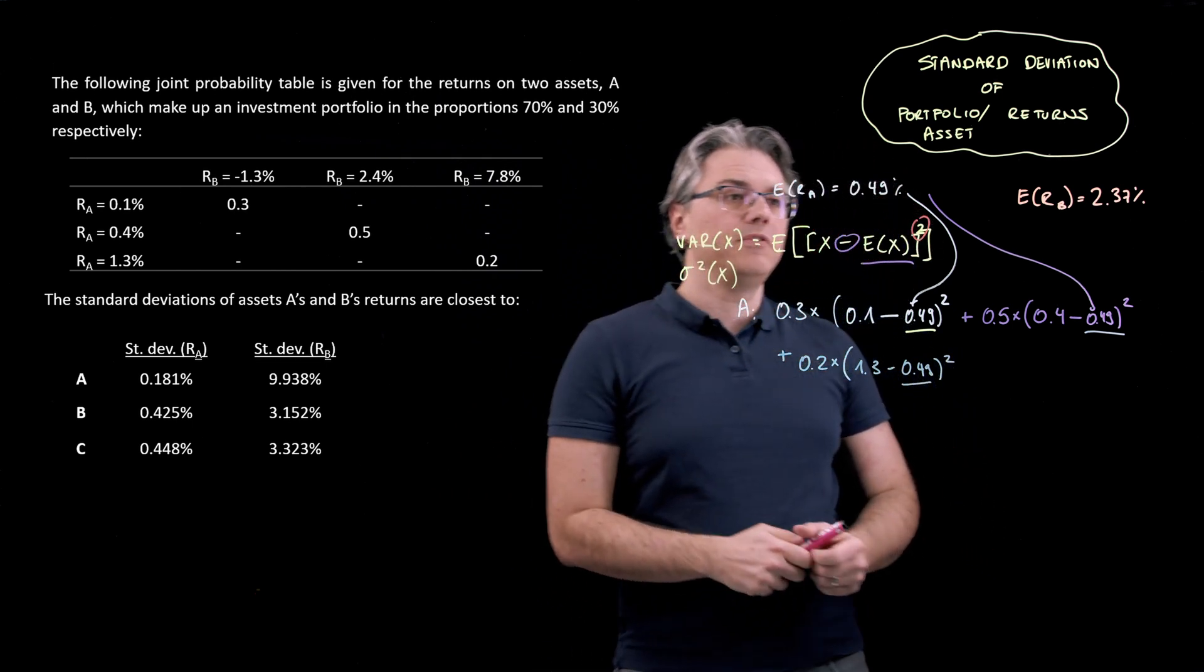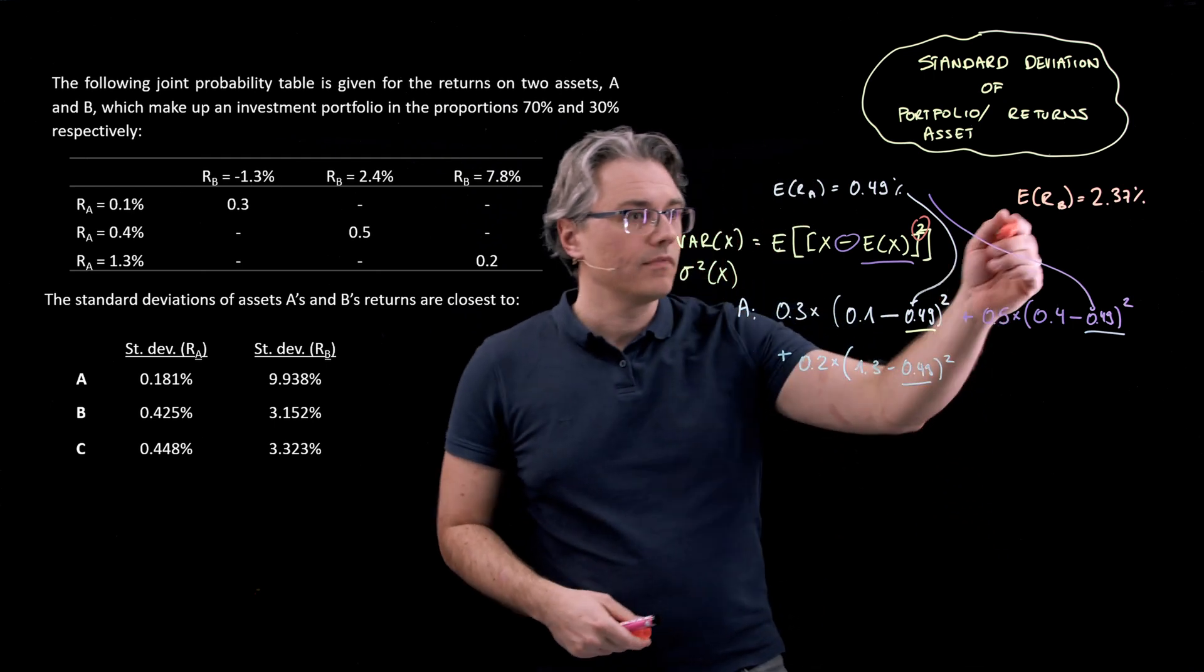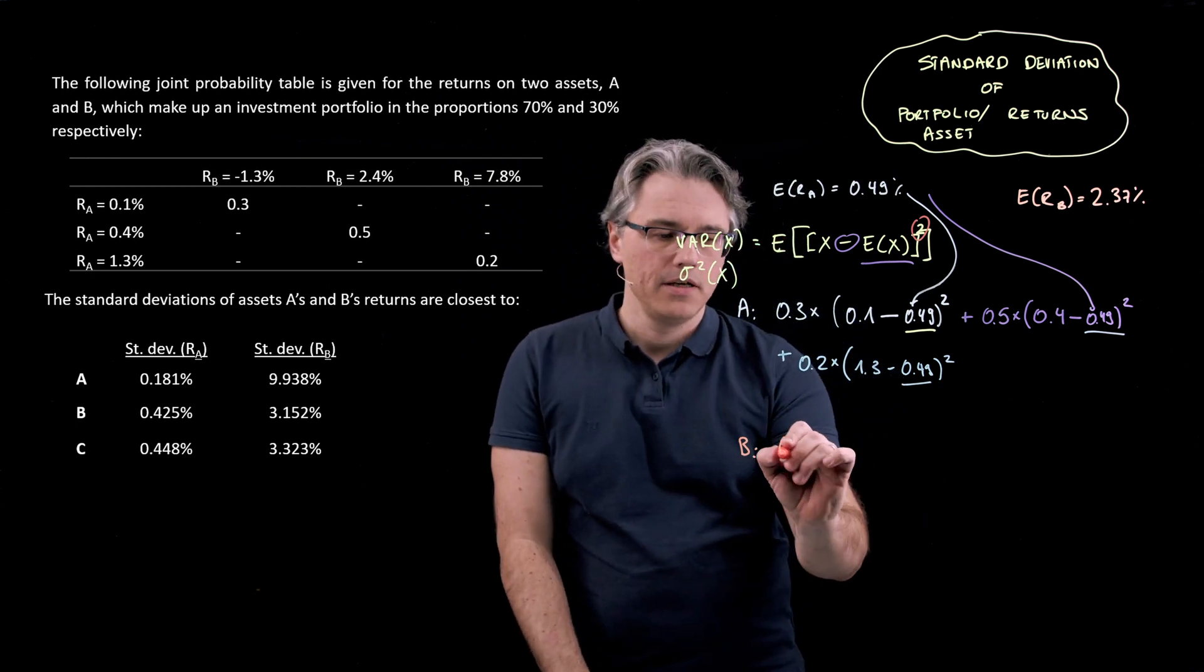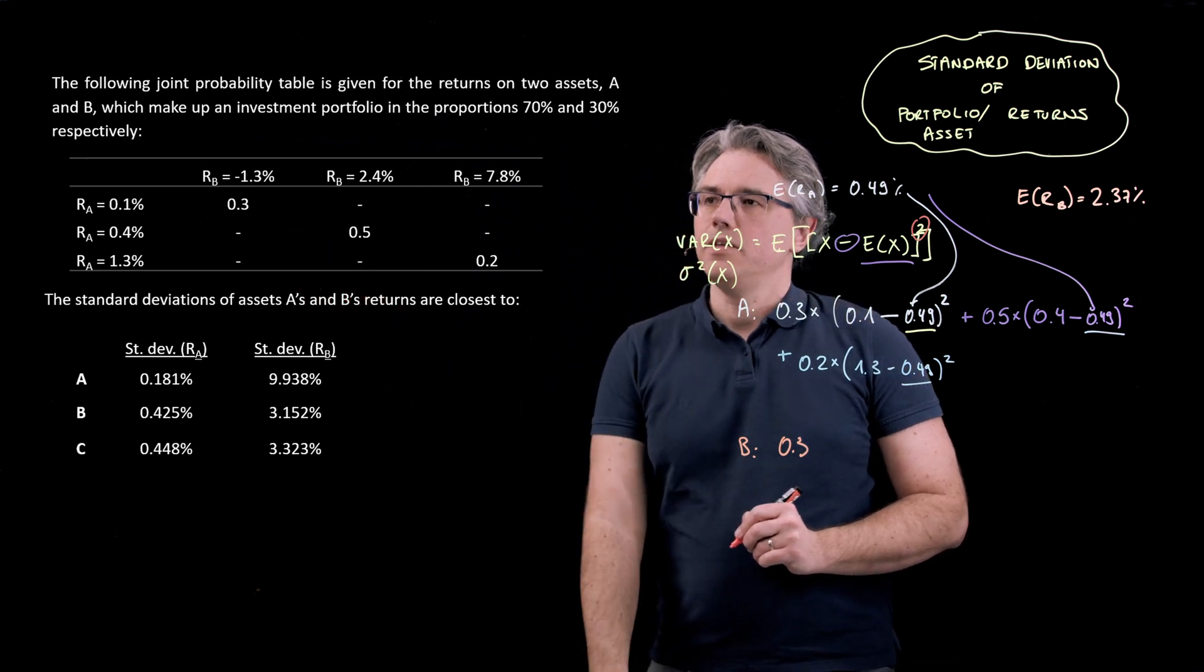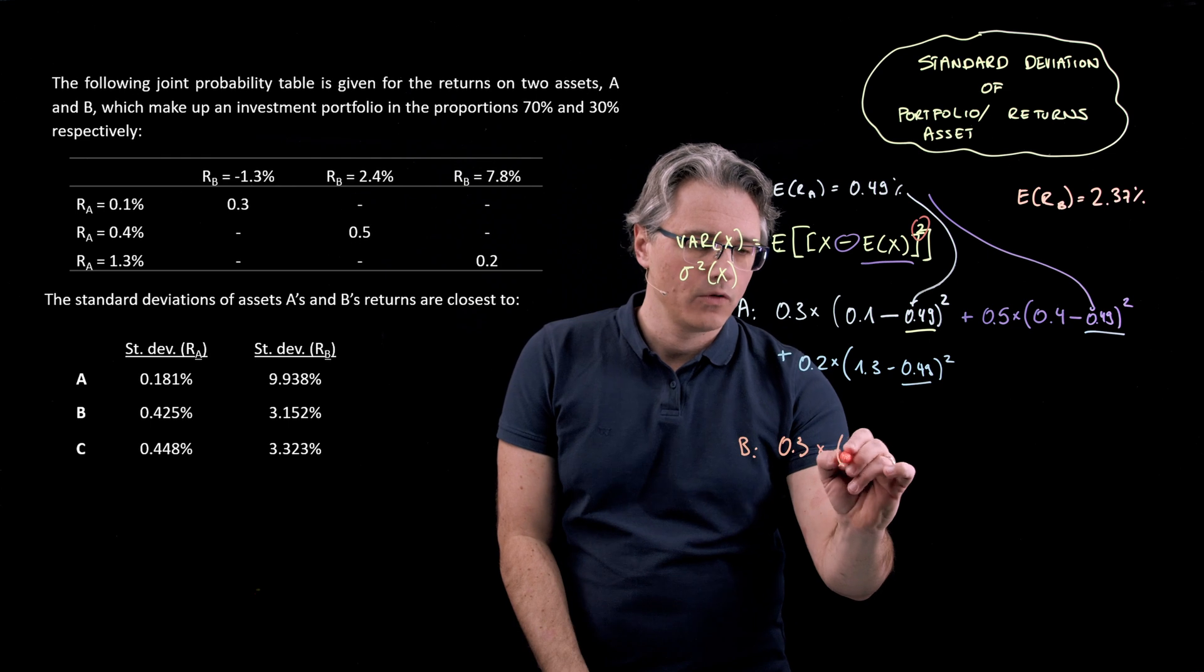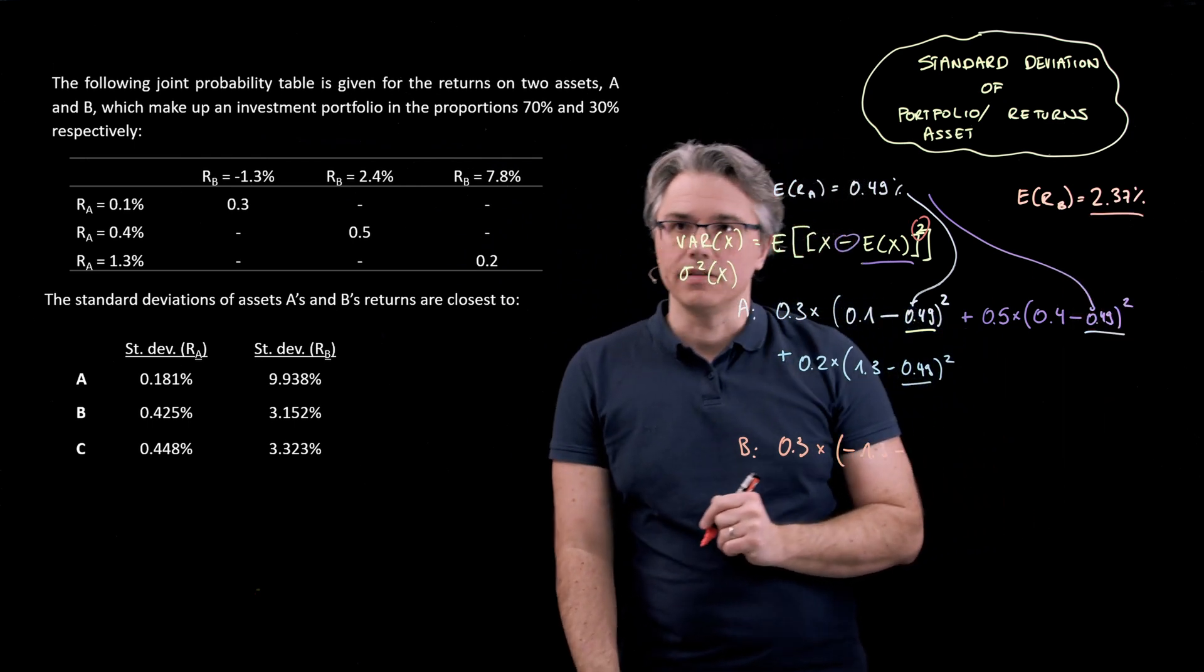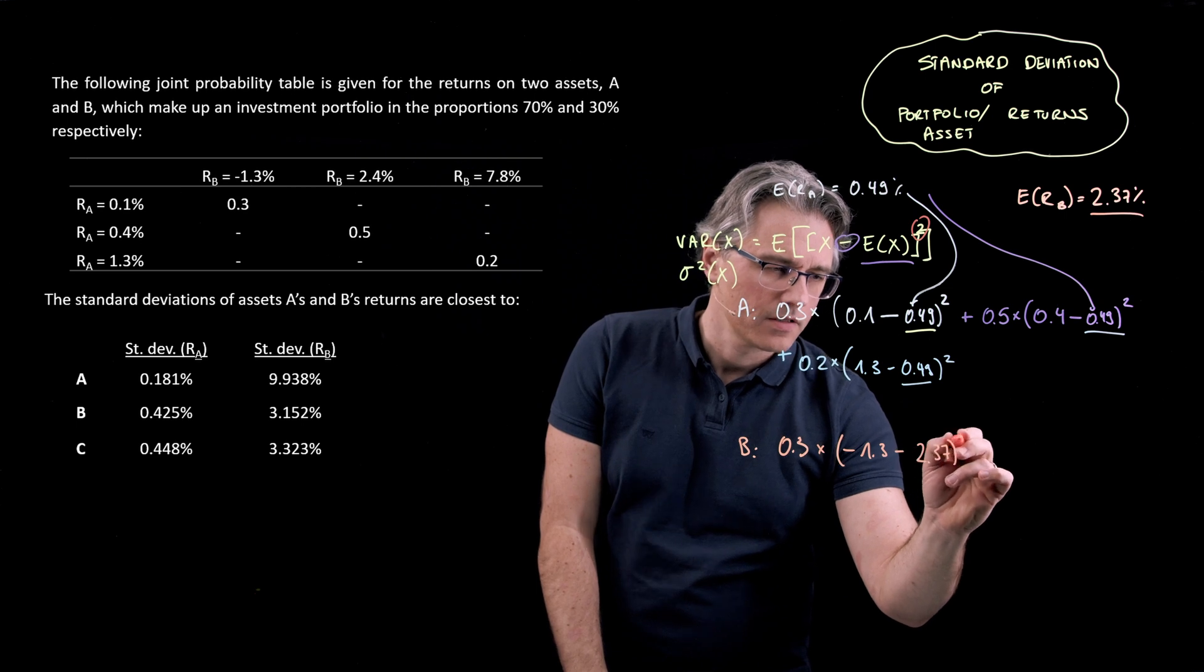Now, before I take my calculator, before I plug it in, let me do the same thing in respect of asset B. So use the same concept for B. Start with the probability. There is a 30% or 0.3 probability that B will take on the first value. That's a negative 1.3. And obviously that minus its expected return is 2.37. Square that.